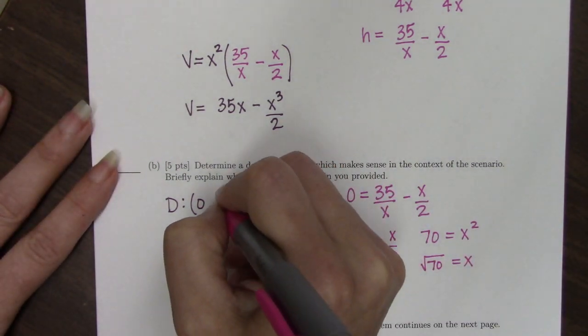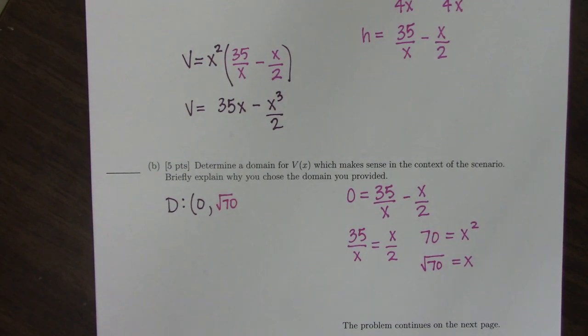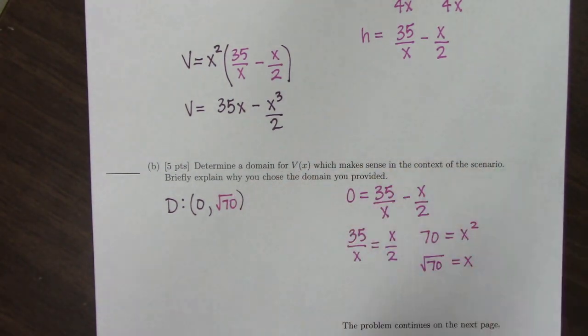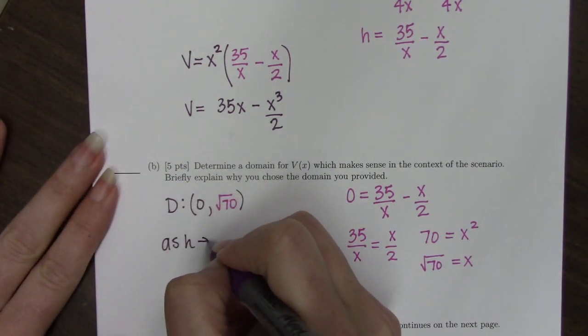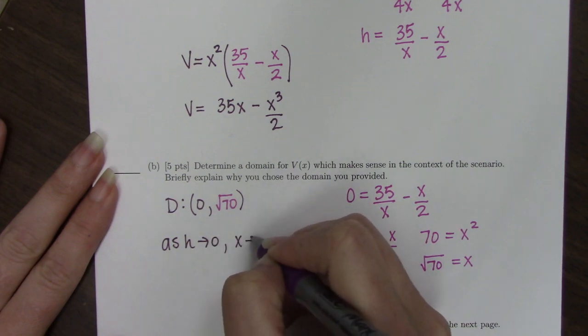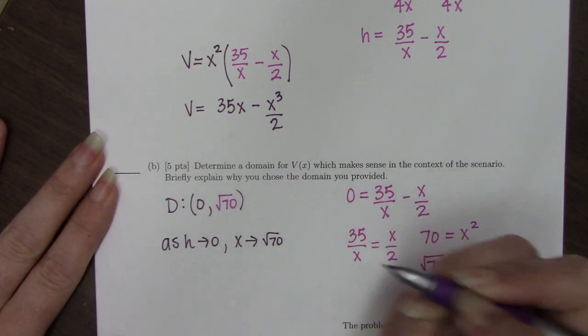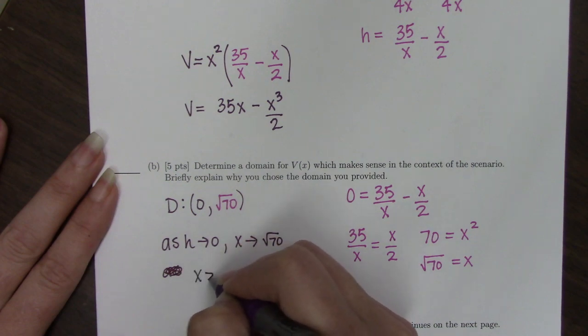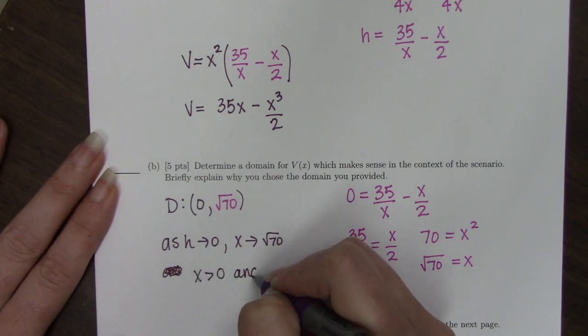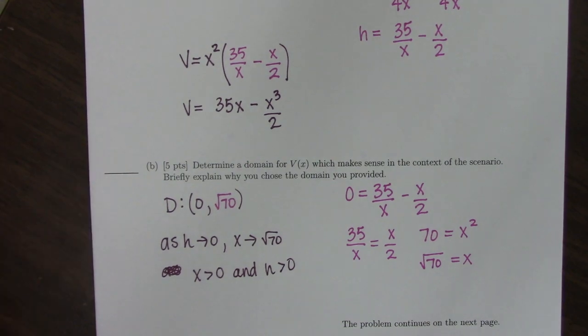That means we're going to let x go up to the square root of 70 but we're not going to let it equal the square root of 70. And so if I just wanted to be a little bit explicit, as h goes to 0, x is going to the square root of 70 and x must be positive and h must also be positive.